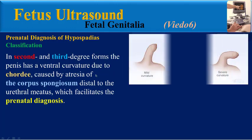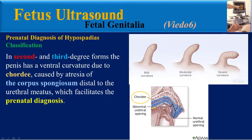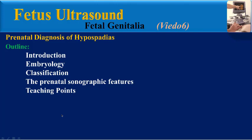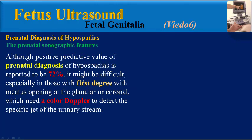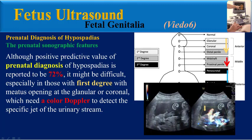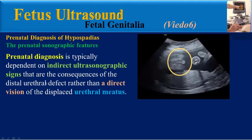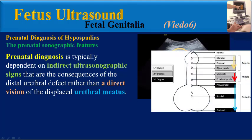In second and third degree forms, the penis has a ventral curvature due to chordae, which is caused by atresia of the corpus spongiosum distal to the urethral meatus, which facilitates the prenatal diagnosis. Although the positive predictive value of prenatal diagnosis of hypospadias is reported to be 72%, it might be difficult, especially in those with first degree, where color Doppler is needed to detect the specific jet of the urinary stream. Prenatal diagnosis is typically dependent on indirect ultrasonographic signs that are consequences of the distal urethral defect, rather than direct vision of the displaced urethral meatus.